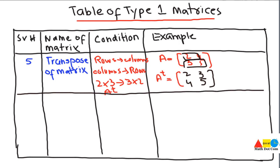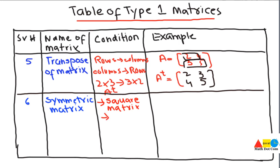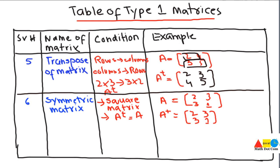The next Type 1 matrix is the symmetric matrix. It is under Type 1 because we apply operations on its rows and columns. The conditions required are: first, the matrix must be a square matrix; second, when we apply the transpose, we get back the original matrix again. This means the transpose does not affect the original matrix at all. When a square matrix satisfies A^T = A, it is called a symmetric matrix.